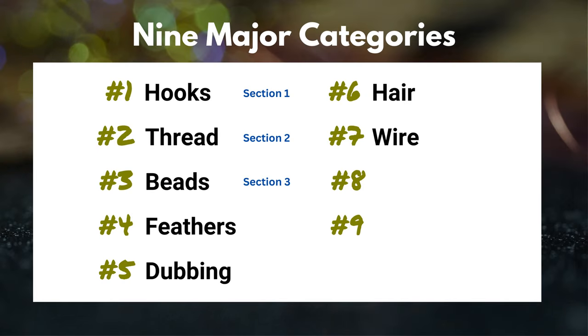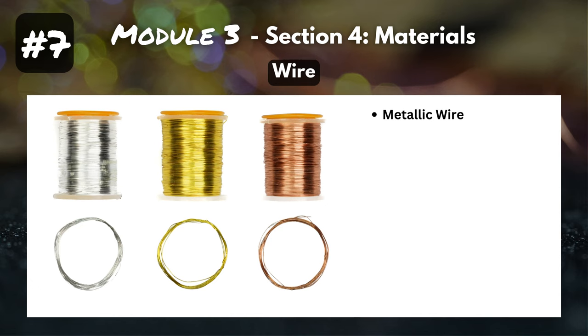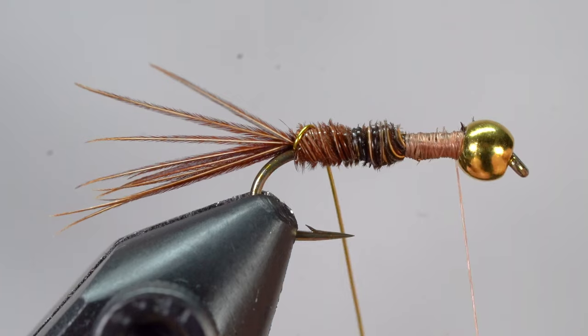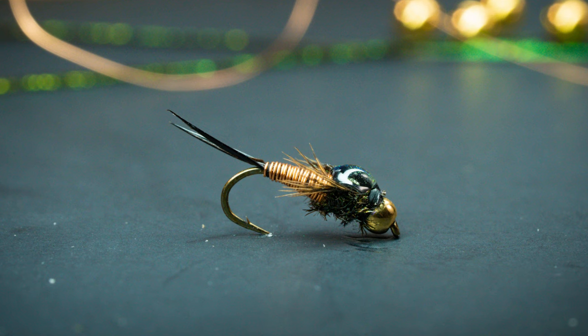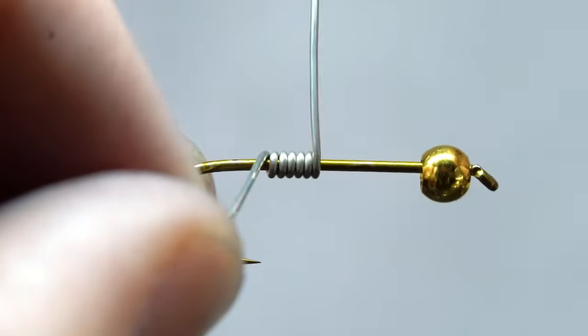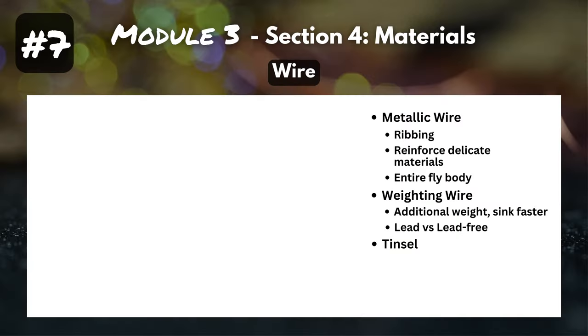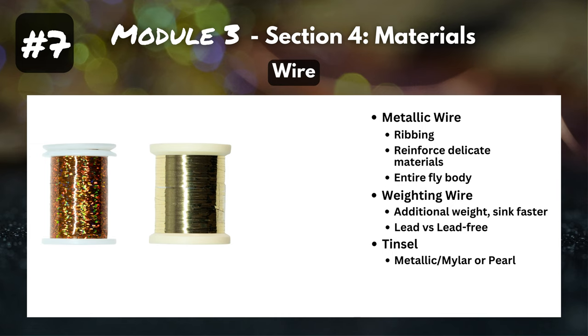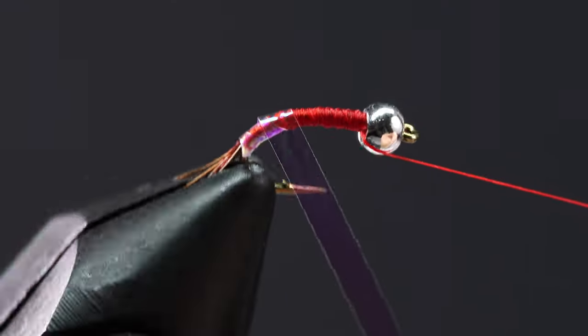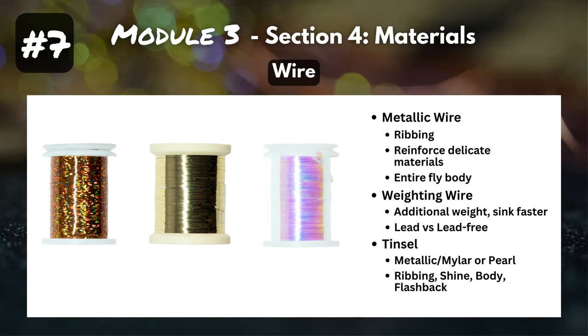Category number seven: wire. We use wire a lot in fly tying, and there are different types. The first and most common is metallic wire, which can be used for ribbing on a nymph, to reinforce delicate materials like pheasant tail, or even for the entire body on something like a Brassie or a Copper John. There's also weighting wire, which you wrap around the hook to make your fly heavier. The two most common are lead and lead-free — here at VFC we opt for the lead-free version for environmental and health reasons. And last on our list is tinsel, which is technically not wire but pretty similar. You've got metallic or mylar and pearl tinsel, used for ribbing or to give your fly a little shine — it can be used as the body on a Rainbow Warrior, or as a bit of flash on a flashback Pheasant Tail or Hare's Ear.